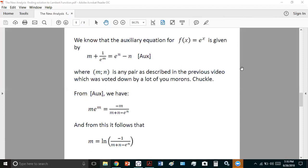we know that the auxiliary equation for the exponential from a previous video is given by this auxiliary equation, where m and n is any pair that are basically derived from a parallel secant, did you get that morons? That's right, a parallel secant to a tangent, and if you were smart enough, you would have seen from the auxiliary equation, that you can get m times e to the m equal to this, and from this, it follows that m is equal to this expression on the right here,